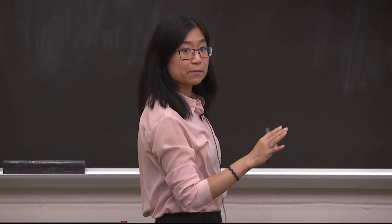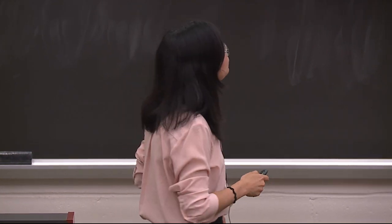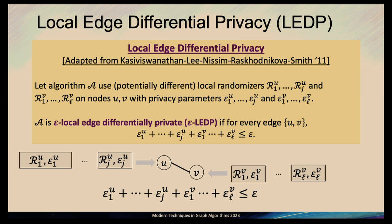Because we're running this distributed protocol, the relevant algorithms we're comparing against are the non-private algorithms for the problem in this distributed model. Using these local randomizers, we can define local edge differential privacy. This definition states that a randomized algorithm uses potentially different local randomizers on the nodes that are endpoints of each edge. The algorithm is epsilon differentially private if the sum of the epsilon parameters for each of these randomizers across the endpoints of the edges is upper bounded by epsilon. Each time you run a local randomizer you lose some amount of privacy, so you want the sum of privacy losses to be upper bounded by epsilon.